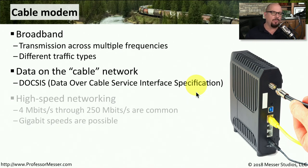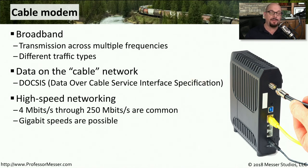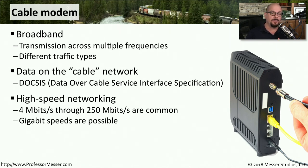This is what we consider high-speed networking. These cable networks can go very high speeds. Very commonly you'll find 4 to 250 megabits per second, but you can get up to gigabit speeds running on these cable modem connections.